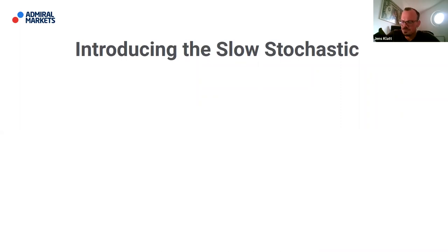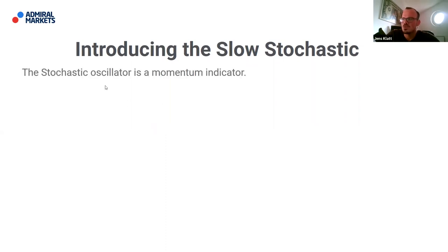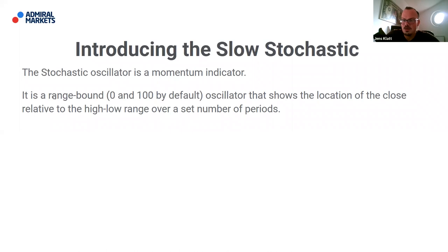The same is true for the slow stochastic — it's also a standard indicator available within MetaTrader. You have to be careful though: there is a slow stochastic and a fast stochastic. We're looking at the slow stochastic here. It's also a momentum indicator, and it's range-bound between zero and 100 by default, oscillating between those two numbers.